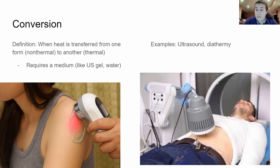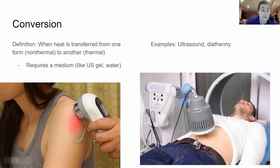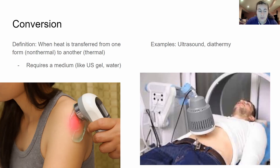Another example of conversion is diathermy. Diathermy is used to heat up a deeper area over a larger surface area. With ultrasound, the treatment area is only about two to three times the size of the sound head, whereas with diathermy it's much larger. You have to make sure the patient doesn't overheat because it heats up deep and fast. Both ultrasound and diathermy convert energy from a non-thermal form into thermal heat.